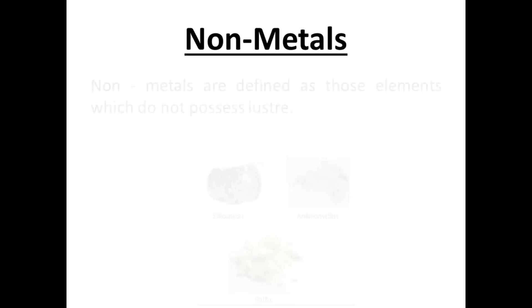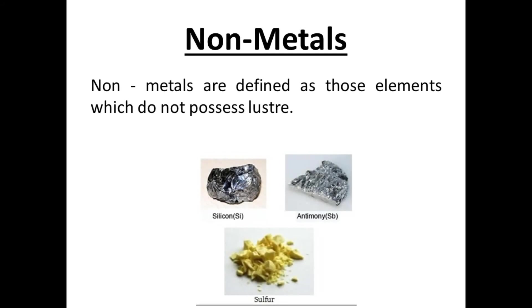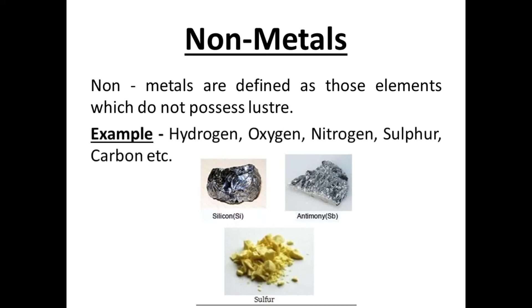Now we will discuss what are non-metals. Non-metals are defined as those elements which do not possess lustre — those elements in which there is no shining. They are known as non-metals. For example, hydrogen, oxygen, nitrogen, sulfur, carbon, etc.